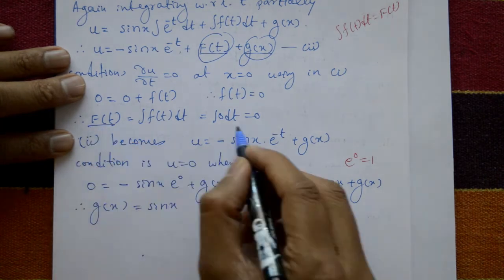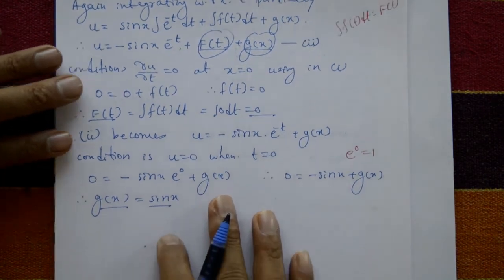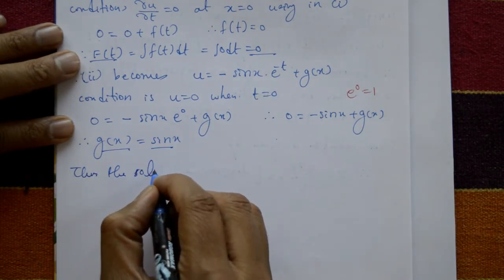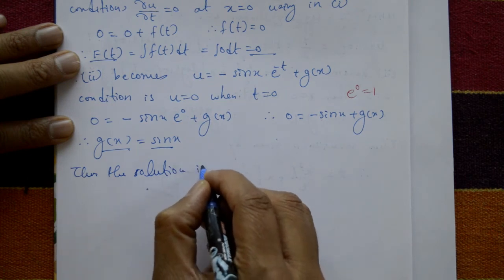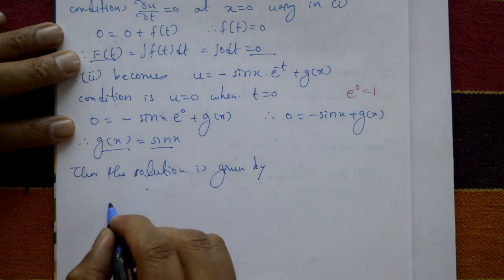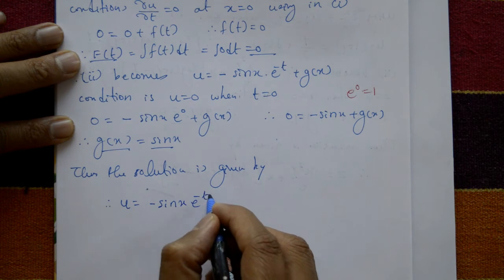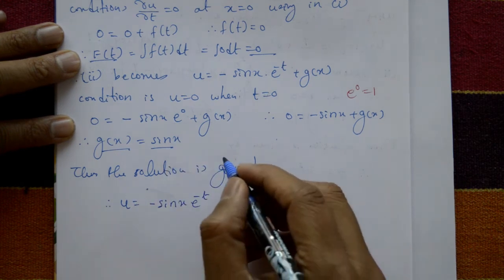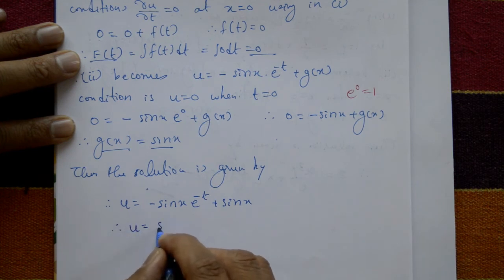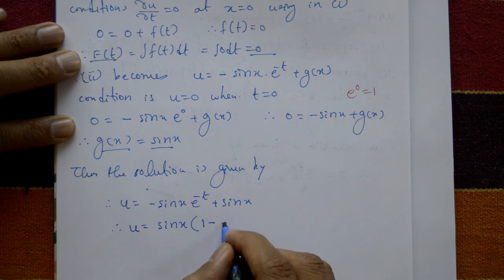Putting F(t) = 0 and g(x) = sin(x) into equation 2, the required solution is u = −sin(x)·e^(-t) + sin(x) = sin(x)·(1 − e^(-t)).